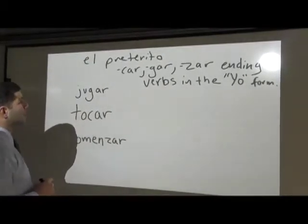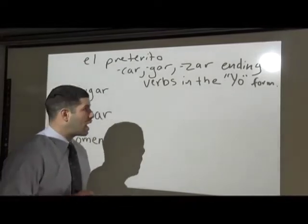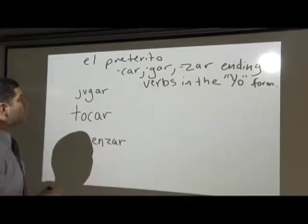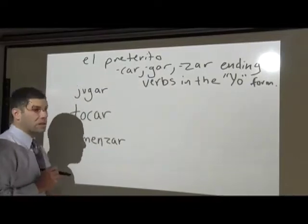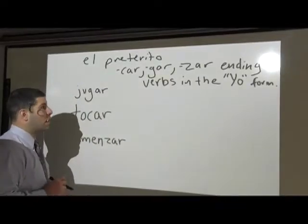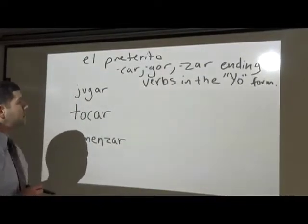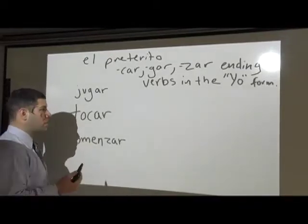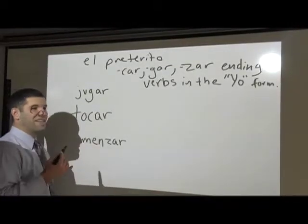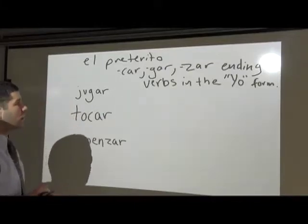We're going to talk about CAR, GAR, and ZAR ending verbs in the yo form and the pretérito. The pretérito is the past completed tense. We already did the regular pretérito forms, so here are some elements of what is irregular in the preterite in Spanish.